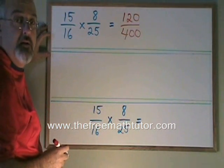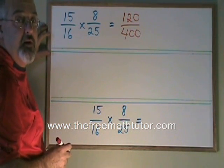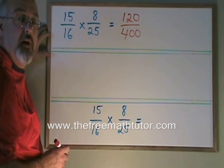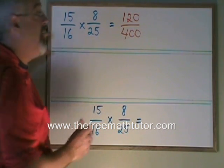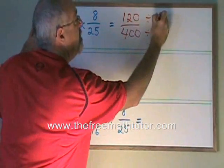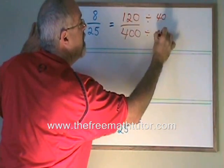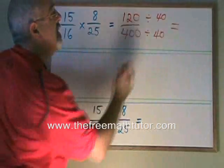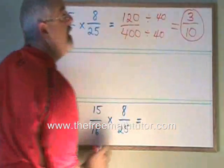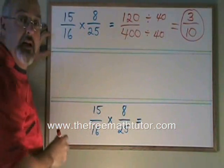We have an answer, but this answer can be reduced. So we will reduce it now. 120 and 400 have a common factor of 40. So if I divide both top and bottom by 40, I get 3 over 10. 3/10 is the answer to this multiplication.